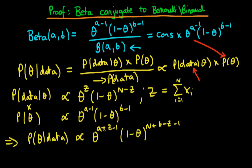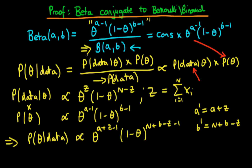We note that this now has exactly the same form as our original beta distribution. Comparing the numerator here with what we obtained, these are essentially of the same form except now we have a new value of a, which I'm going to call a primed, equal to a plus z, and a new value of b, which I'm going to call b primed, equal to n plus b minus z. Since the posterior distribution must integrate to one, we need to divide through by a normalizing factor.